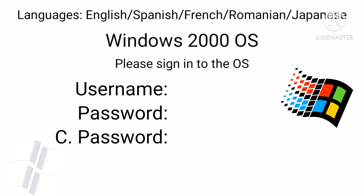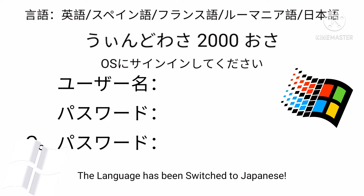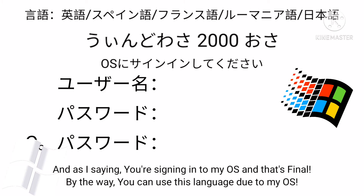I am not going to click Spanish, French, Romanian, nor Japanese. And I'm not going to sign in to your OS. Alright, you know what? Switching to Japanese language. The language has switched to Japanese. As I was saying, you are signed into my OS and that is final. You can also use this language when signing into the OS.